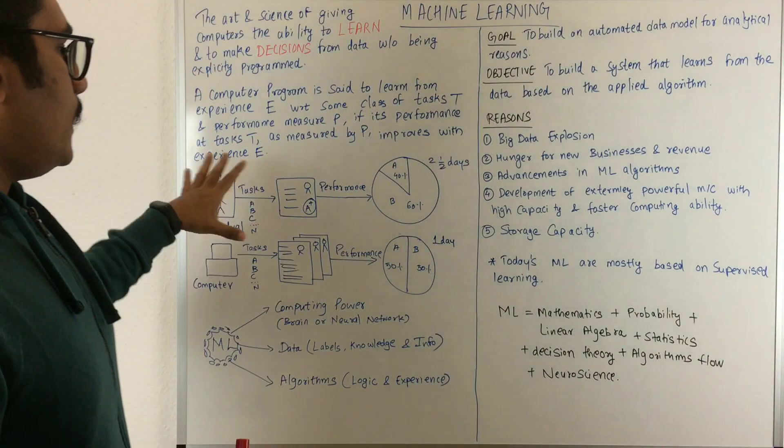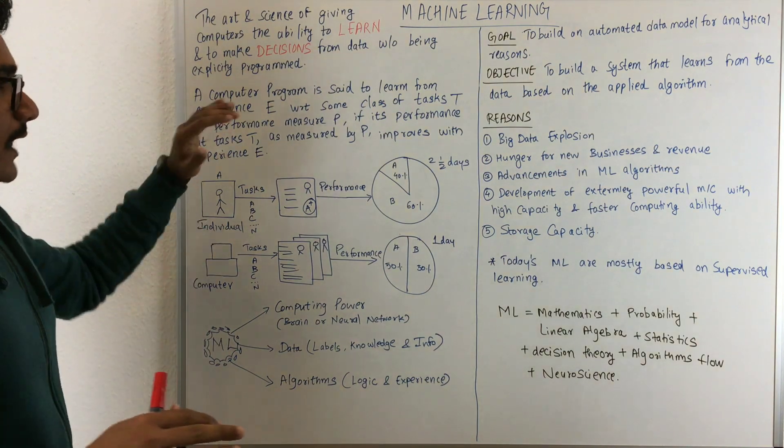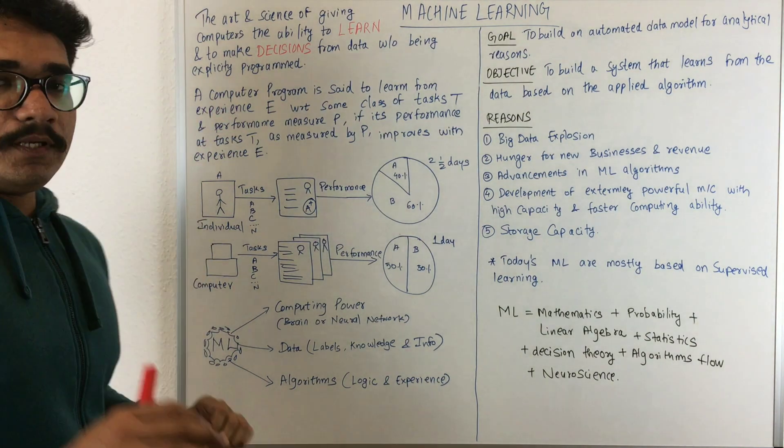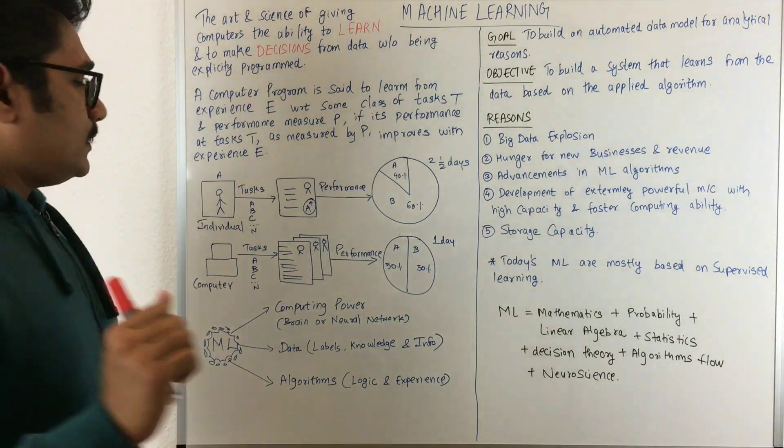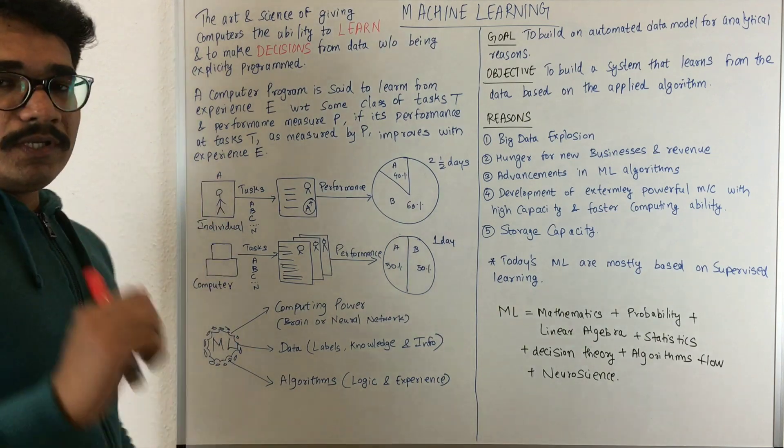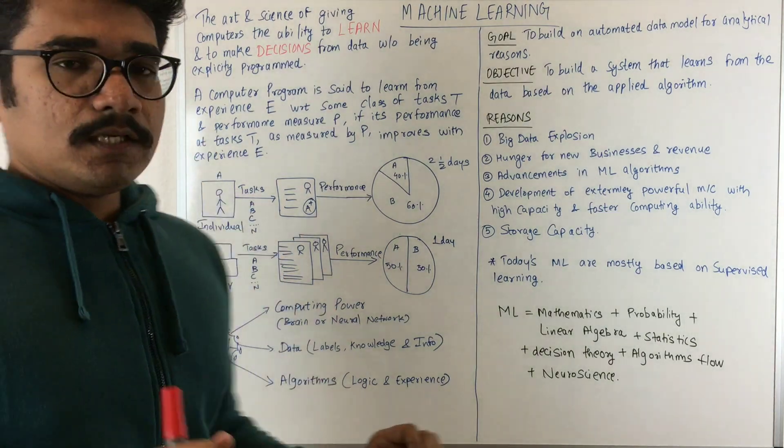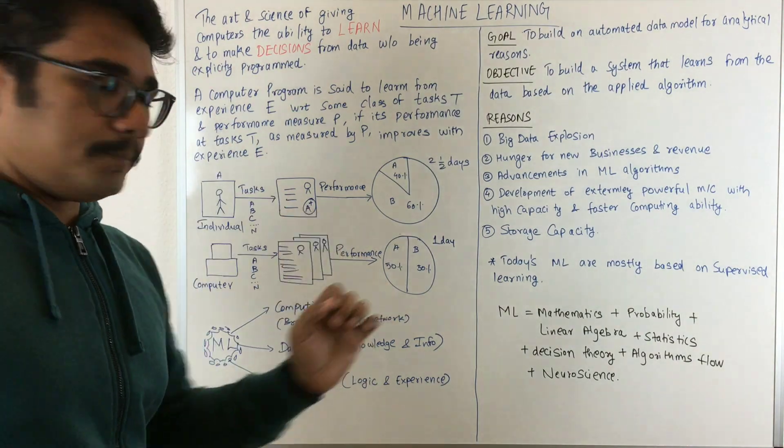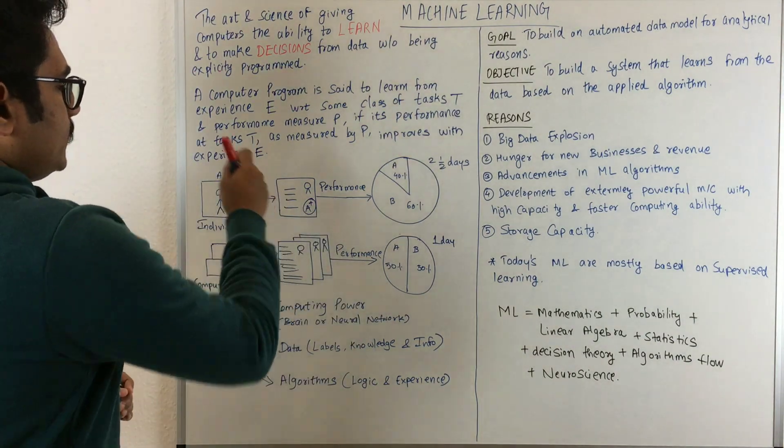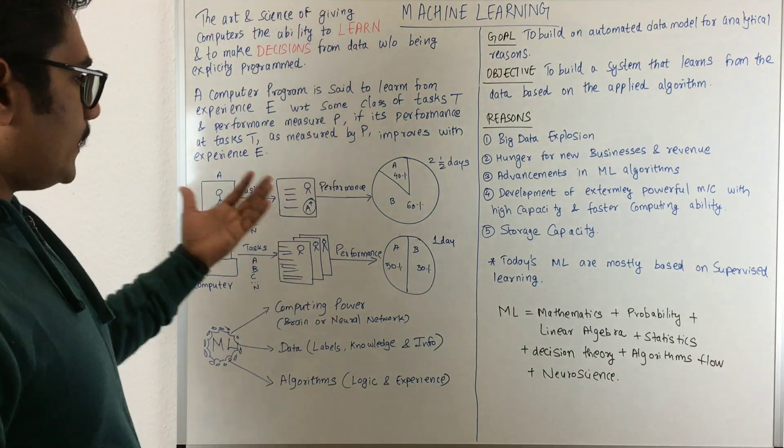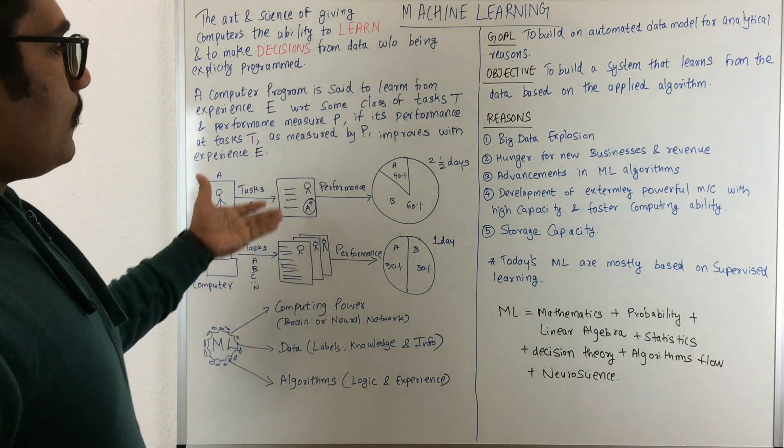Let's understand with an example. In a company, an individual is assigned certain tasks, say A, B, C up to N. At the end, there will be some performance measure evaluated by the project manager, and based on that, he will be given an experience of that particular task.